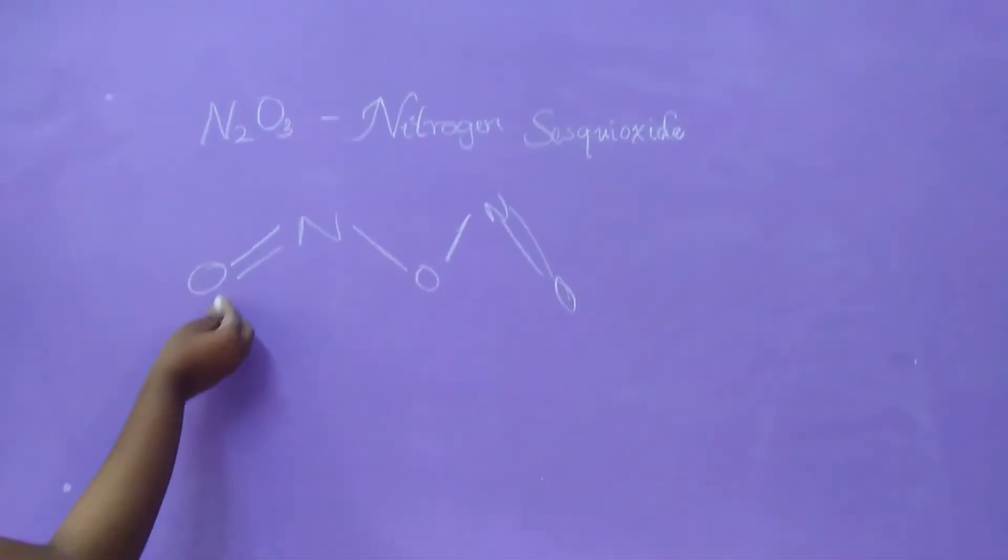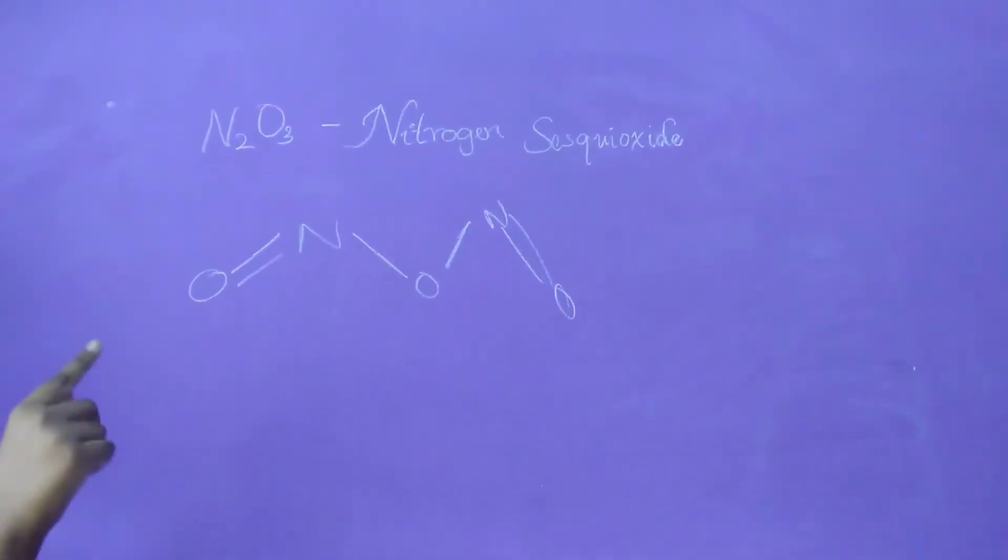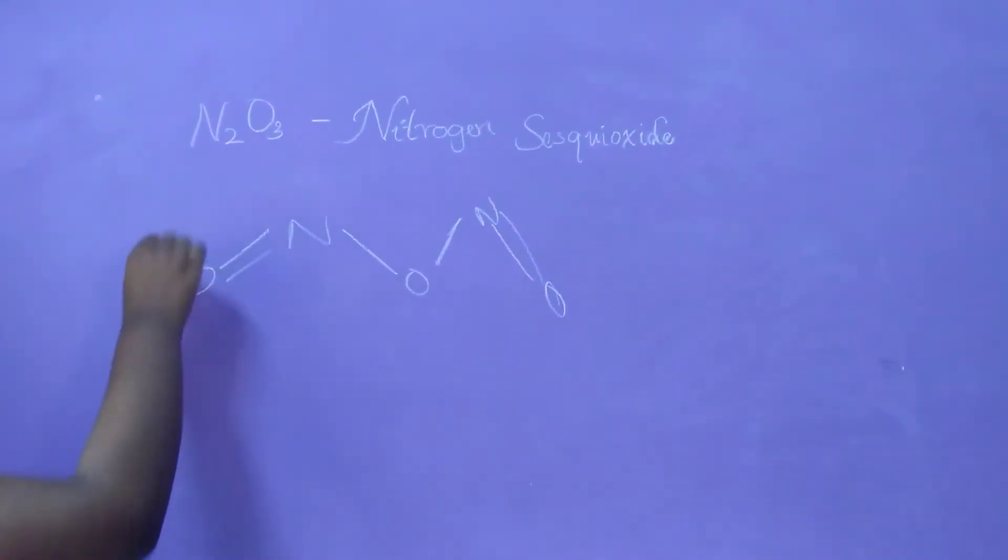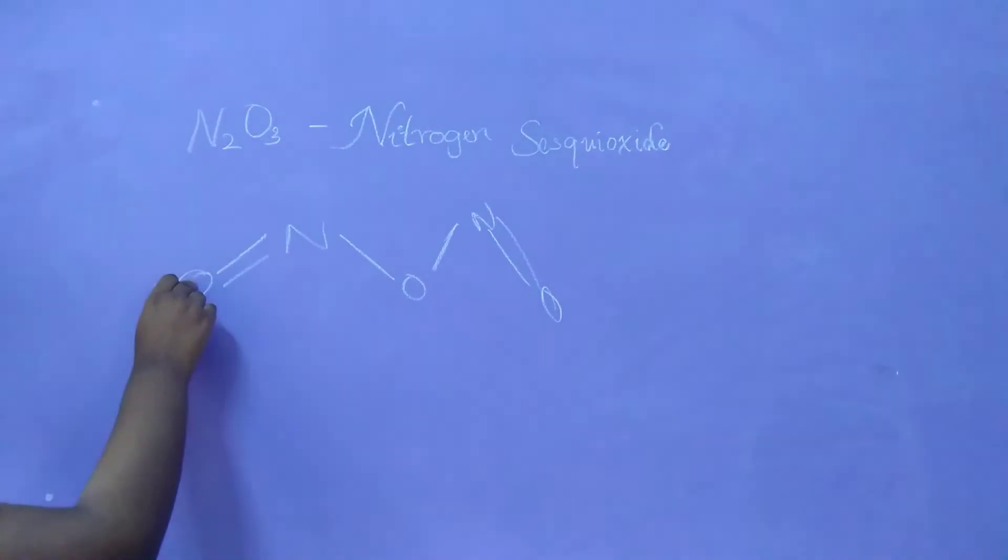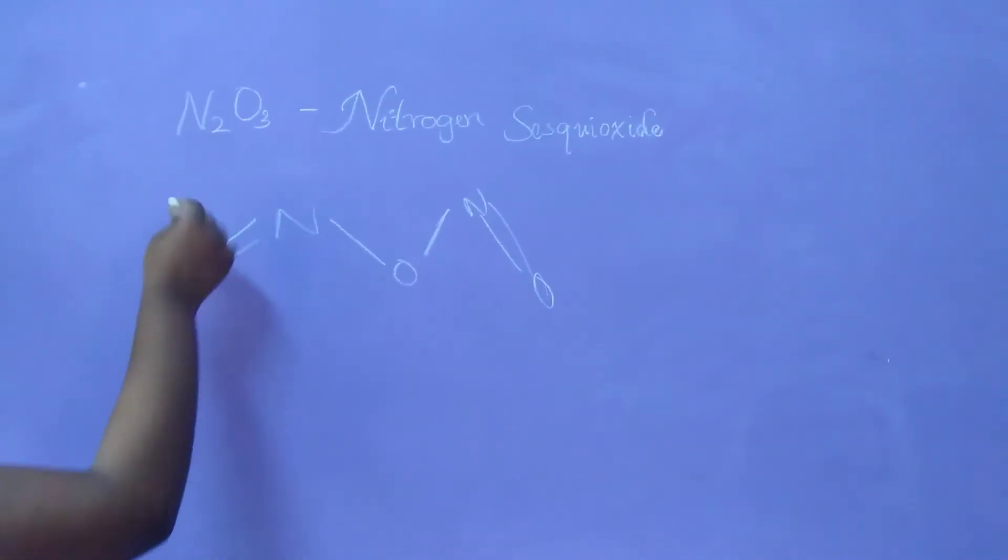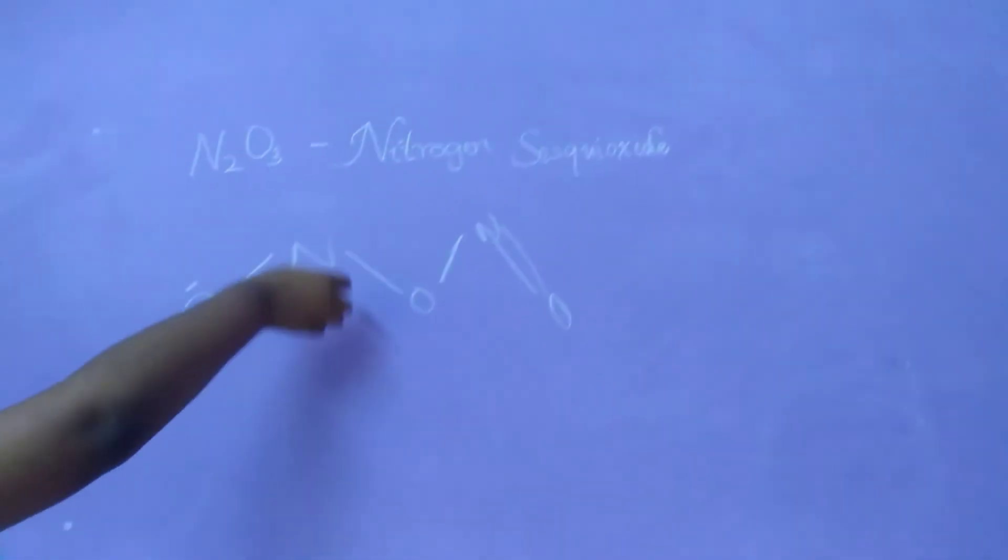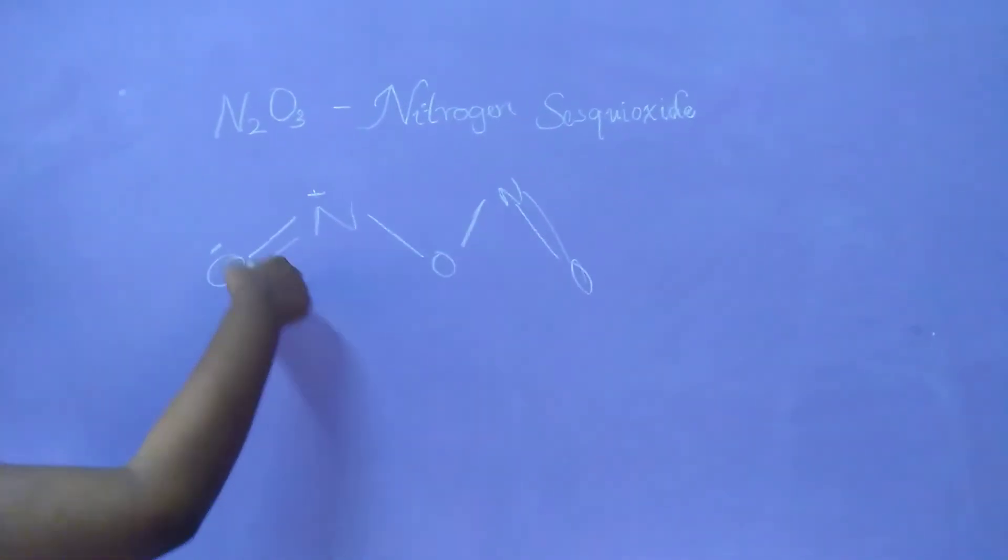So in this, here we have to go with more electronegative to less electronegative. Here more electronegative, you can find oxygen. So oxygen is more electronegative, so it will have minus charge. And obviously, nitrogen is less electronegative, it will have plus charge. As you can see here, two bonds.